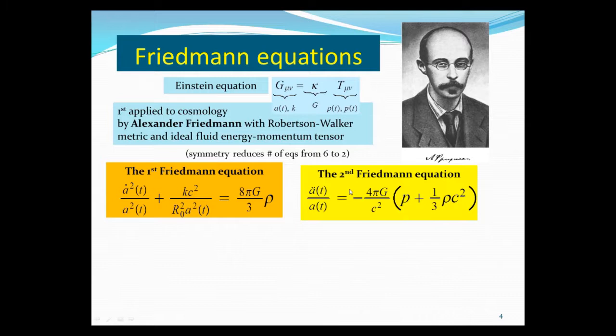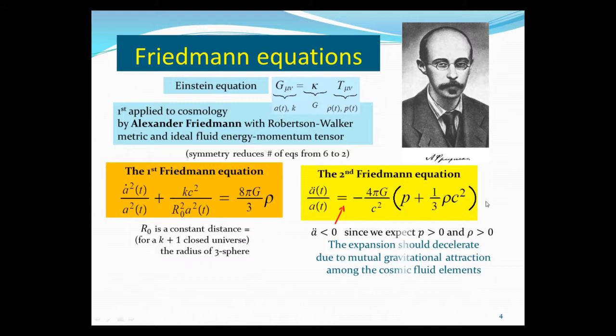The first equation relates the first derivative of the scale factor to the curvature, Newton's constant, and the mass density. And a₀² is, remember, we talked about constant distance. For example, in the closed universe, it would be the radius of the three-sphere. And the second Friedmann equation is the equation about the second derivative of the scale factor and Newton's constant times—here is pressure and ρc² density, or rest energy density. You notice that because we expect P and ρ to be positive, so that if the parenthesis is positive, and there's a negative sign here, so therefore the second derivative of a(t) is negative. So the expansion should decelerate, because negative acceleration due to gravitational attraction among cosmic fluids.